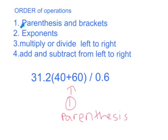Order of operations. First comes the parentheses and brackets, then the exponents. Then you have to multiply or divide from left to right, and then you have to add and subtract from left to right.